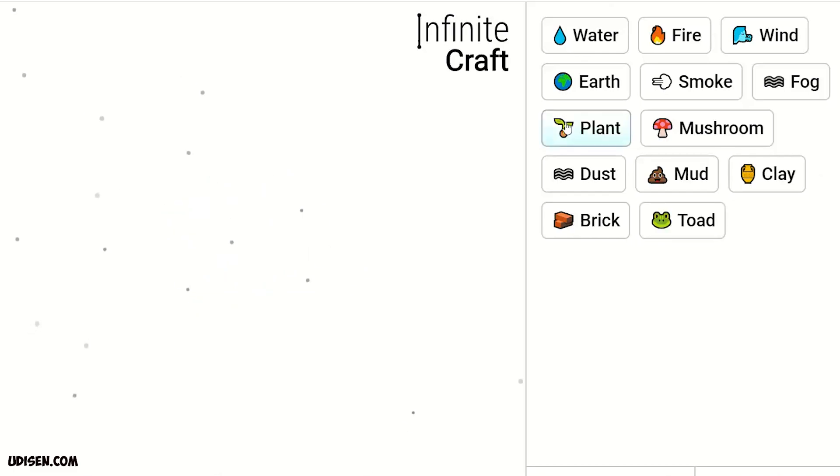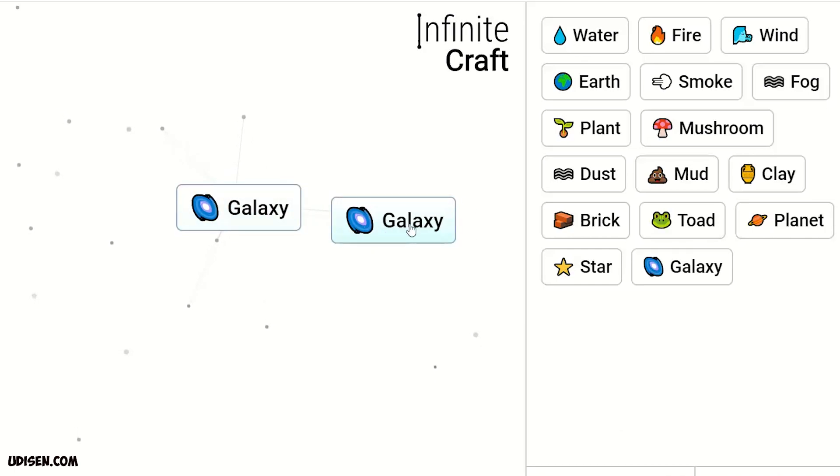Elf and dust makes planet. Two planets make star. Two stars make galaxy. Two galaxies make black hole. Two black holes make wormhole. Wormhole plus black hole makes time travel. Time travel and elf makes fossil. Leave fossil here.